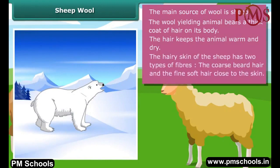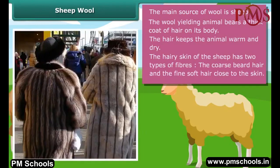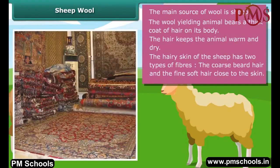The hairy skin of the sheep has two types of fibers: the coarse beard hair and the fine soft hair close to the skin. The fine hair provides the fibers for making woolen clothes, and the coarse hair provides wool for making carpets.